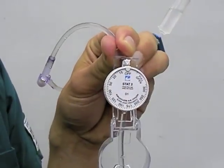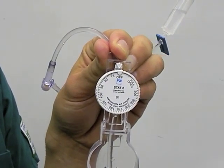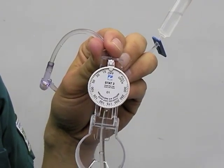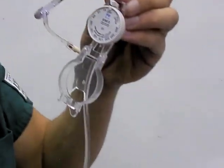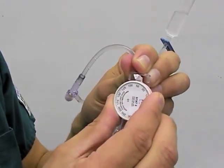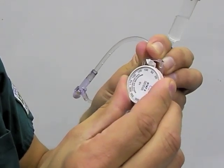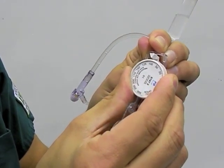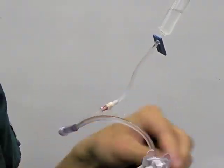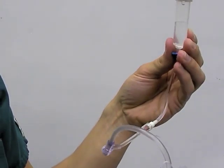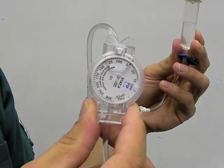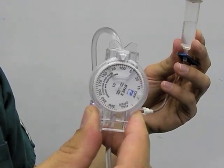Now that we have our administration set connected to both the solution bag and patient, we can start our infusion and set our drip rate. In this case, we will be setting our drip rate to 100 milliliters per hour. Once we set our drip rate, we will want to manually confirm it by counting our drops per minute in the drip chamber. 100 milliliters per hour with a drop factor of 15 drops per milliliter should be 25 drops per minute.